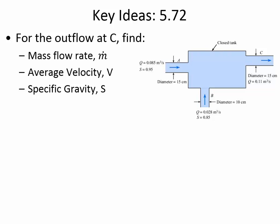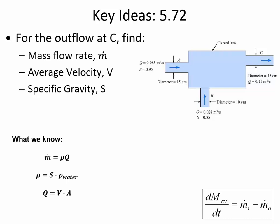It's usually true that Q in equals Q out, but in this case that's not true — what we have is that mass flow is conserved, but volumetric flow may not necessarily be conserved. What we can always rely on is our definition of mass flow rate: the mass flow rate is the density times the volumetric flow rate. We can calculate the density of a fluid using specific gravity multiplied by the density of water, and Q equals VA.